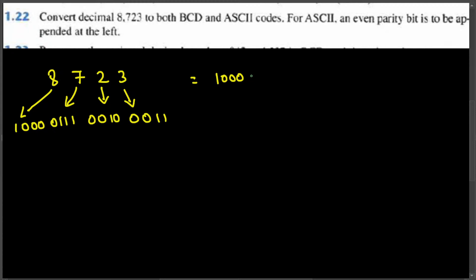Writing them all together, the BCD of decimal 8723 is: 1000 0111 0010 0011. That completes the first part — converting decimal 8723 to BCD.